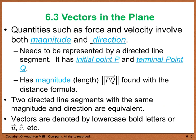In order to represent something that has magnitude and direction, we are going to use a directed line segment that has an initial point P and a terminal point Q. We say that it has magnitude or length, shown with double absolute value notation, and I will show you how to calculate that here in a little bit.